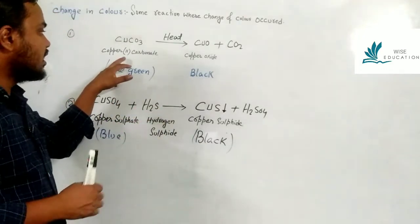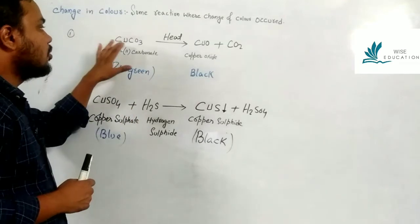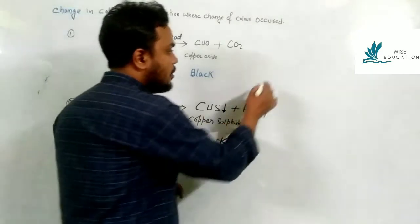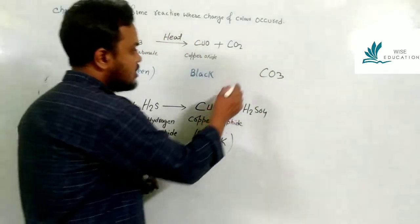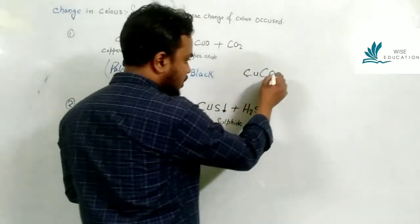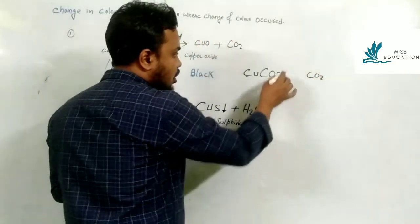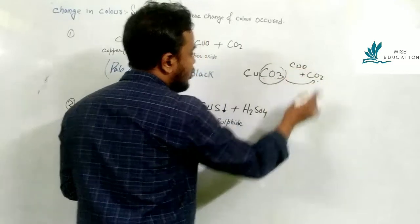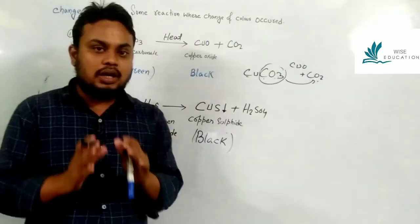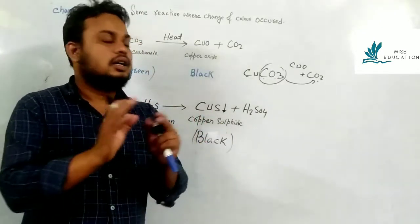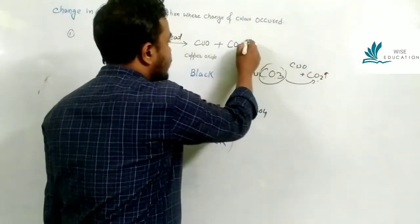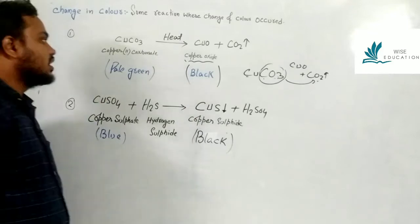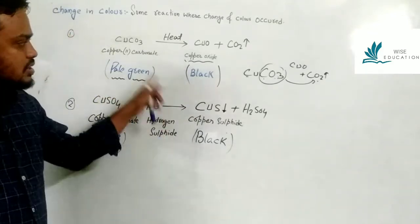When copper carbonate is heated, it is converted into copper oxide and carbon dioxide. Copper carbonate is pale green in color and it turns black — that is copper oxide.